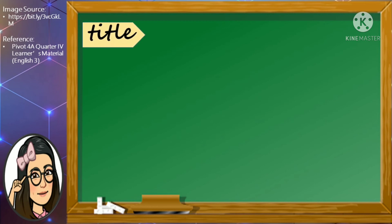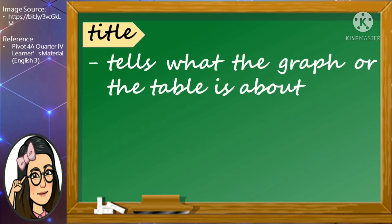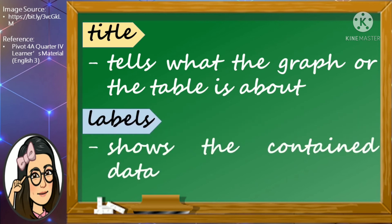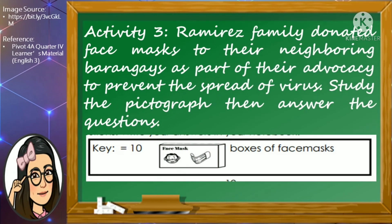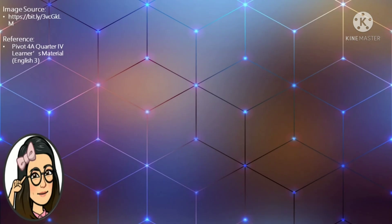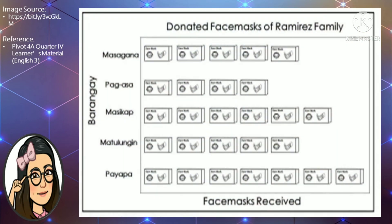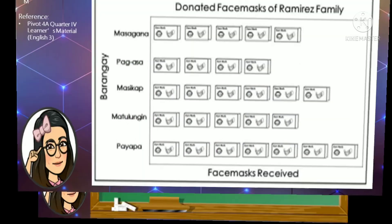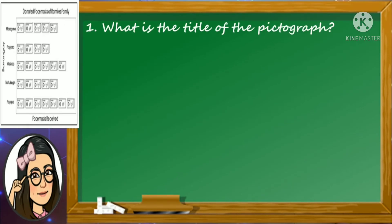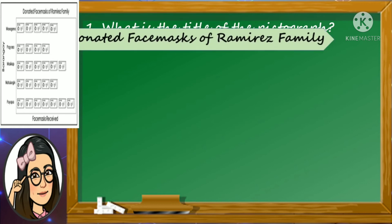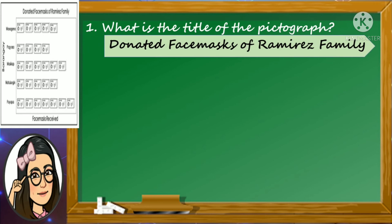Graphs and tables have a title that tells us what the graph or table is about. They also have labels showing the contained data. For your third activity, the Ramirez family donated face masks to their neighboring barangays as part of their advocacy to prevent the spread of the virus. Study the pictograph, then answer the questions that follow. Here is the pictograph presenting the donated face masks of Ramirez family. First question: what is the title of the pictograph? Excellent! The title of the pictograph is Donated Face Masks of Ramirez Family.